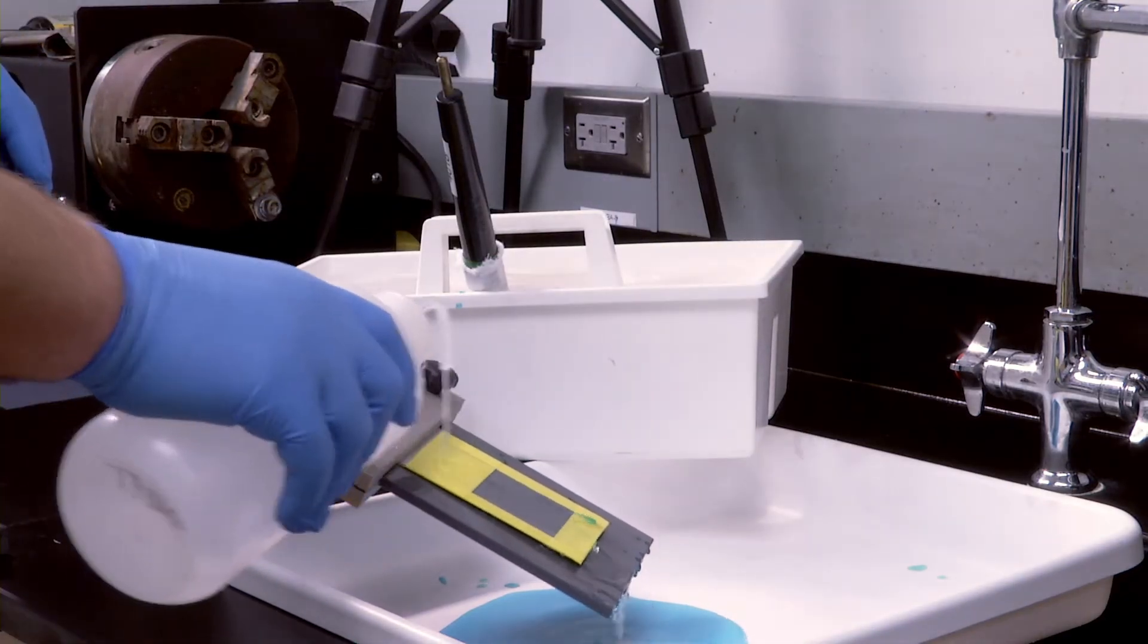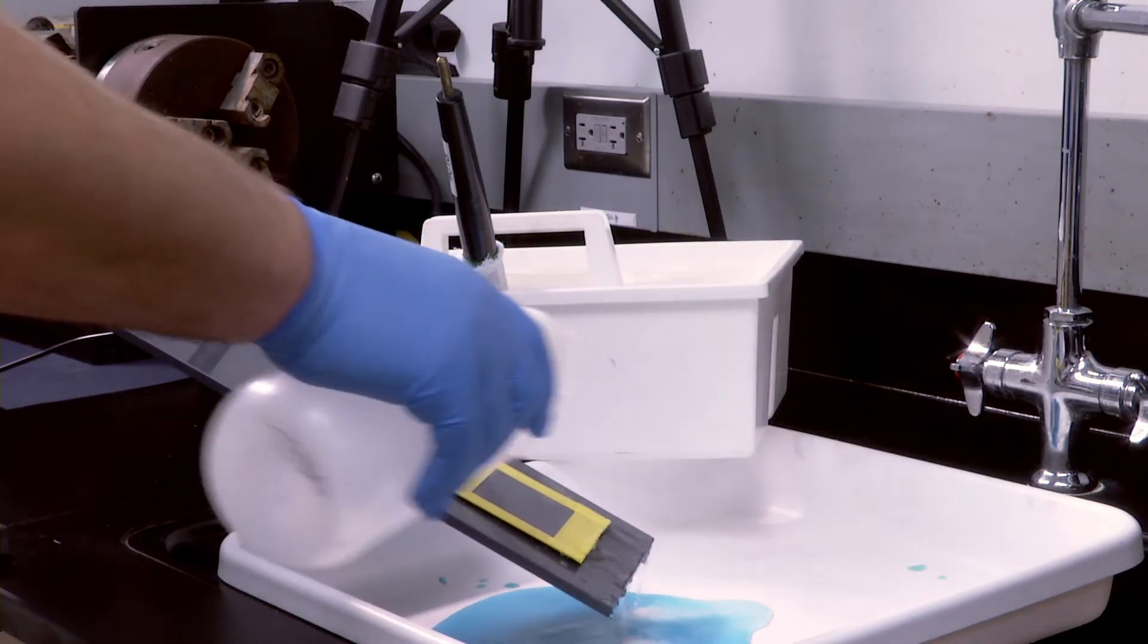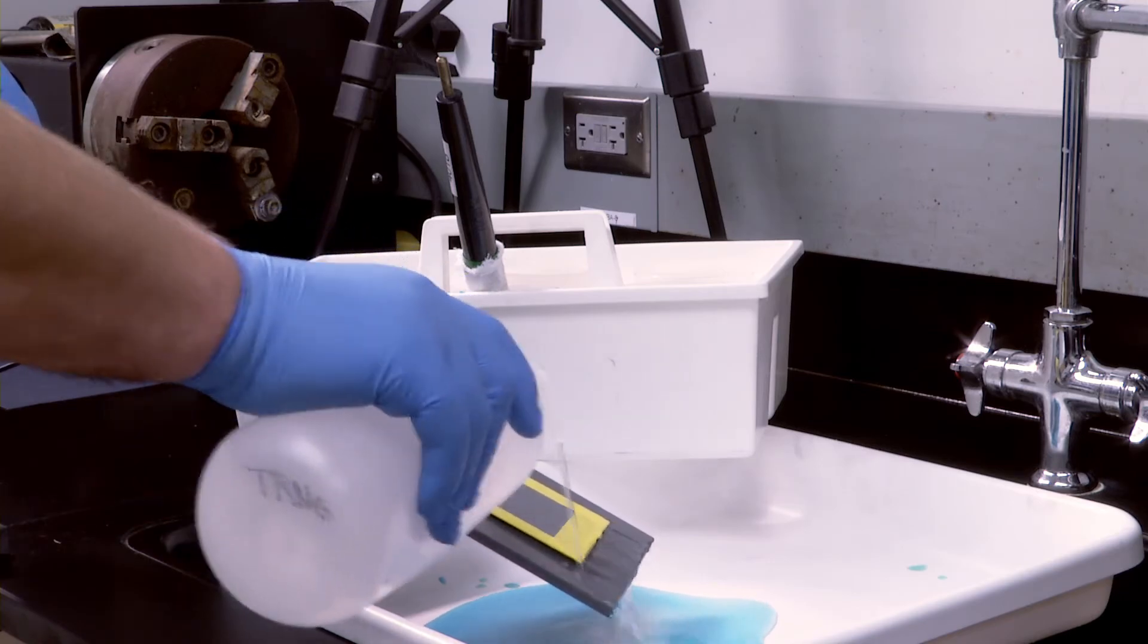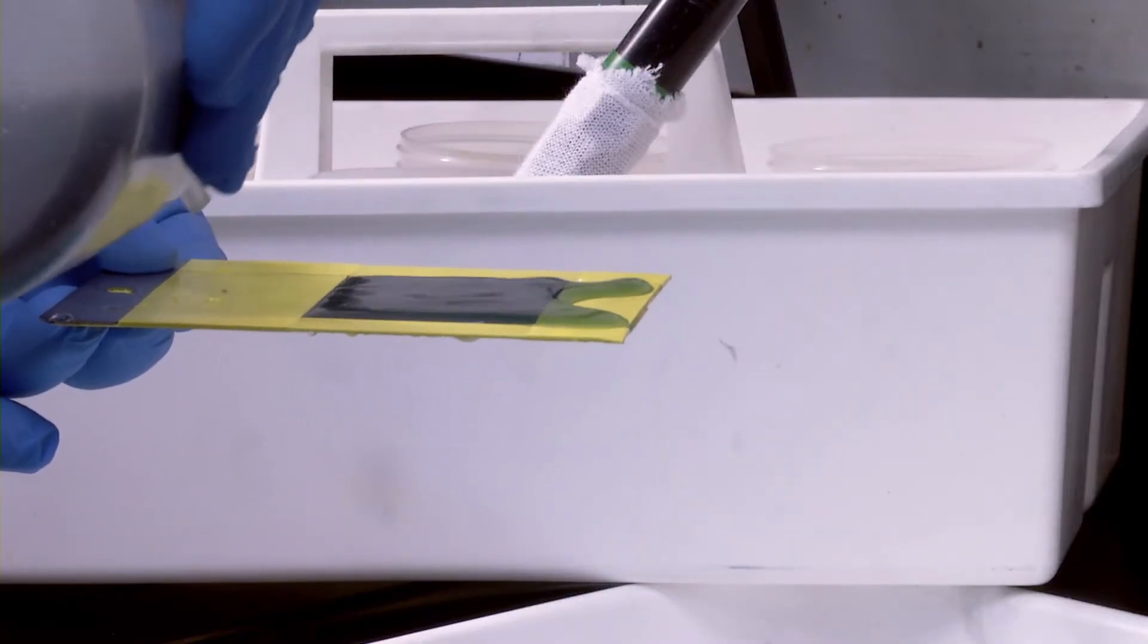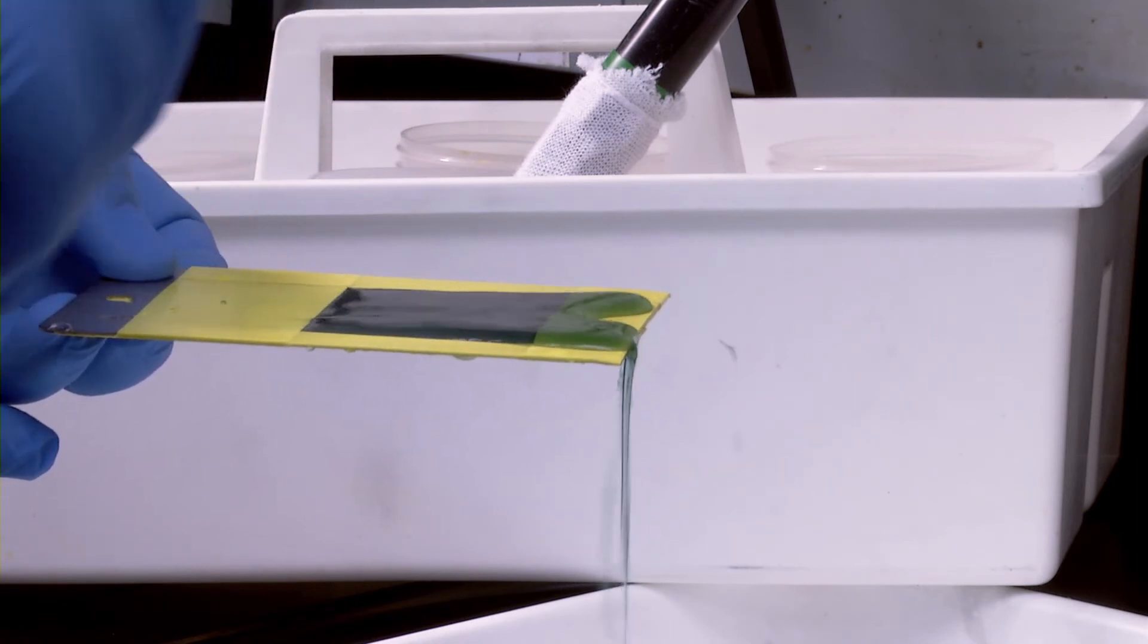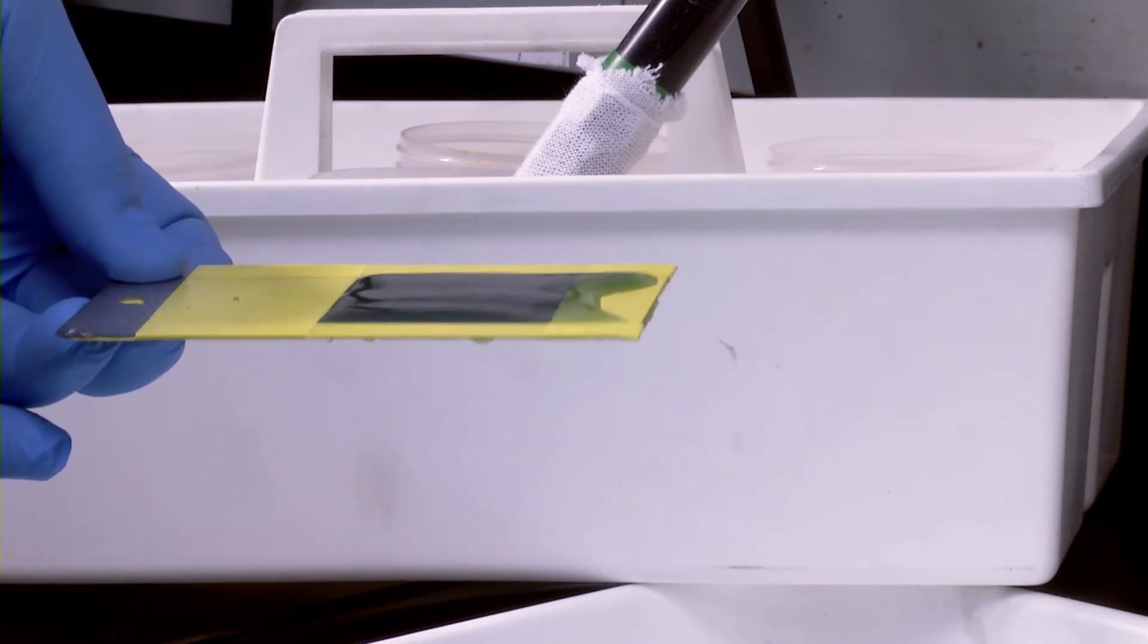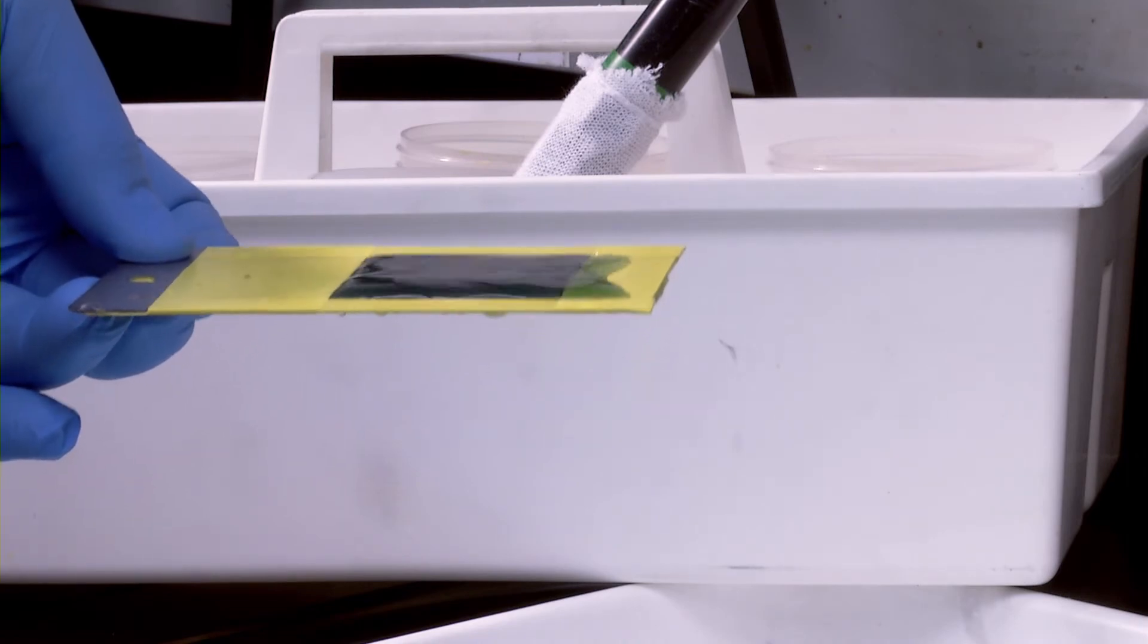After plating, the part is rinsed thoroughly with deionized water and the trivalent conversion coating is gently applied to the surface using a squeeze bottle. The surface is kept saturated for two minutes, after which the part is gently rinsed with deionized water and then allowed to air dry.